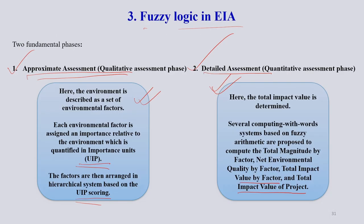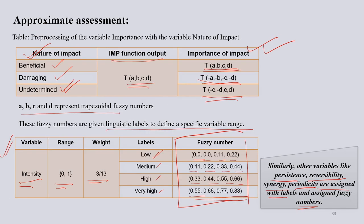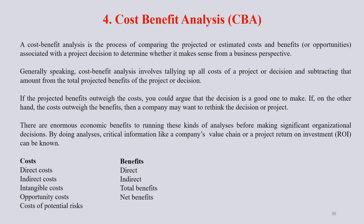Today we will discuss analysis following the previous method of EIA — fuzzy logic. We discussed in detail about fuzzy logic in EIA, its different methodologies and assessment procedures. Today we will discuss another method, method number 4, which is cost benefit analysis or CBA. Cost benefit analysis is another very important method for successful EIA exercise.